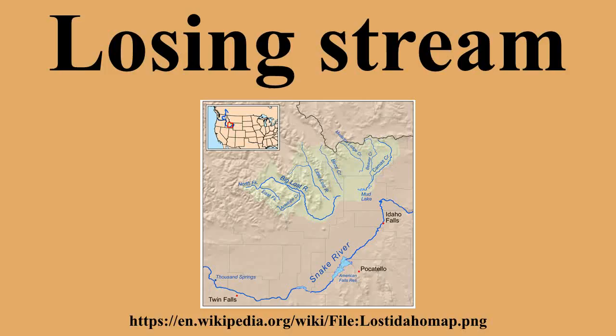As it flows through the Notch, it passes through Lost River Gorge, an area where enormous boulders falling off the flanking walls of the Notch at the close of the Last Ice Age have covered the river, creating a network of boulder caves.